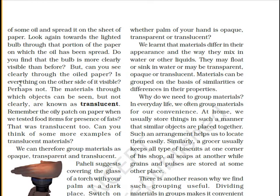But can you see clearly through the oiled paper? We cannot see clearly — we can see a part of it, but not clearly. Not everything on the other side is fully visible. Materials through which objects can be seen but not clearly are known as translucent. Remember the oily patch on paper when we tested food items for presence of fats — that was translucent too.